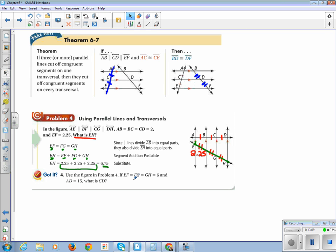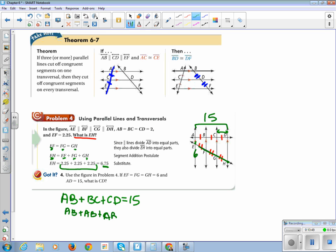We are going to use this figure, but instead, EF, instead of being 2.25, it's going to be 6. And AD is 15. They want to know what is CD. I know that AB plus BC plus CD equals 15. I know that these guys are all equal to each other, so I'm going to substitute in AB for all of these. I can say that three ABs equal 15. I divide both sides by 3, and I get AB equals 5. So, therefore, CD must also be equal to 5.